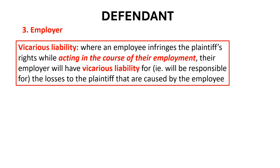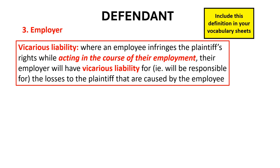The third type of defendant is the wrongdoer's employer. When an employee infringes a plaintiff's rights while acting in the course of their employment, their employer will have vicarious liability for the losses caused to the plaintiff — that is, the employer will be responsible to the plaintiff for losses caused by the employee. Find the term 'vicarious liability' in your vocabulary sheets and write this definition in there, then highlight the words in red bold italicized type. If required to define vicarious liability, include those highlighted words.